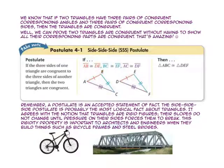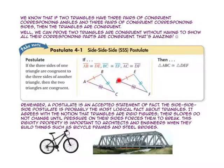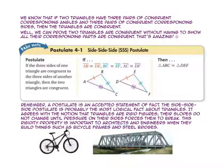Side AB is congruent to side DE, side BC is congruent to side EF, and side CA is congruent to side FD. That means triangle ABC is congruent to triangle DEF. A postulate is an accepted statement of fact. The side-side-side postulate is probably the most logical fact about triangles — it agrees with the notion that triangles are rigid figures whose shape does not change until pressure on their sides forces them to break. This rigidity property is important to architects and engineers when they build things such as bicycle frames and steel bridges.